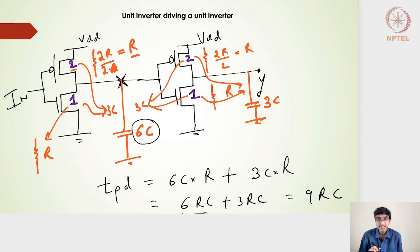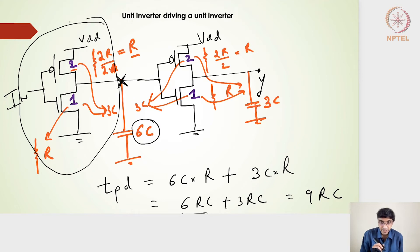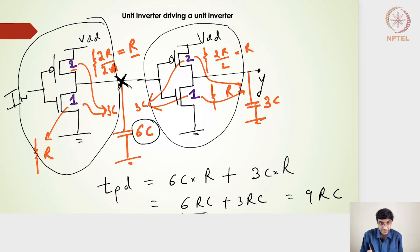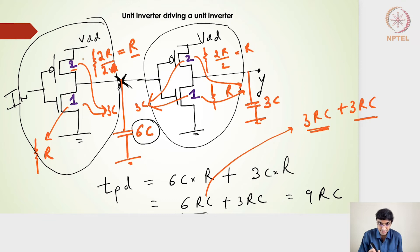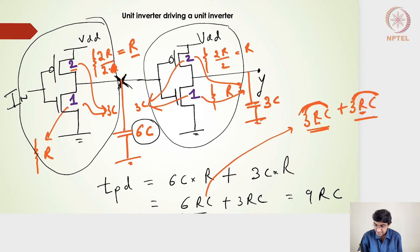Overall the propagation delay is 6rc + 3rc = 9rc. This breaks down as 3rc + 3rc: the first 3rc comes from the first stage's own capacitance multiplied by its switching resistance, and the second 3rc comes from the next stage's input (load) capacitance multiplied by the first stage's switching resistance. So the load capacitance is the input capacitance of the second stage, and together they give tpd = 9rc for two cascaded unit inverters.